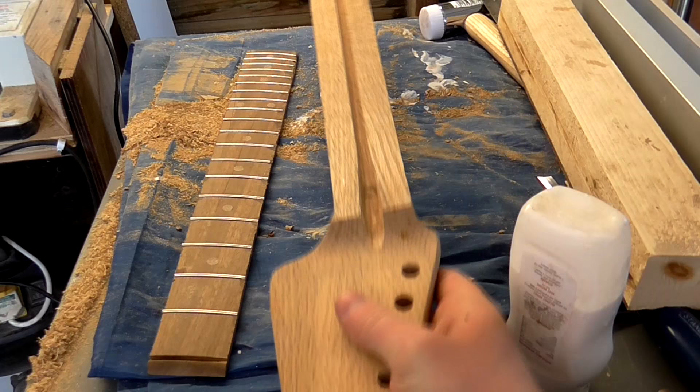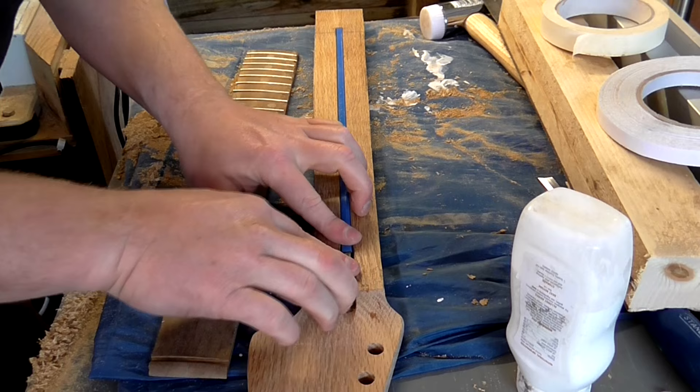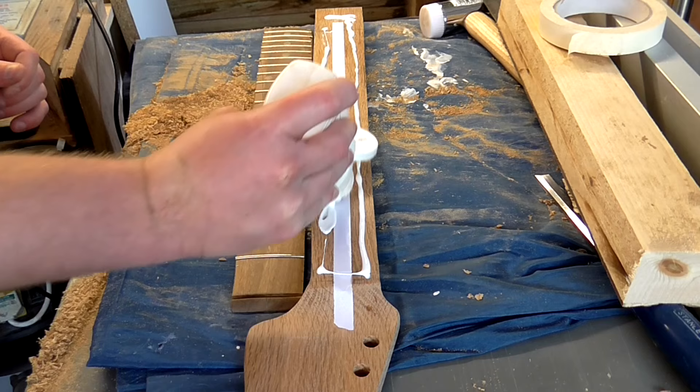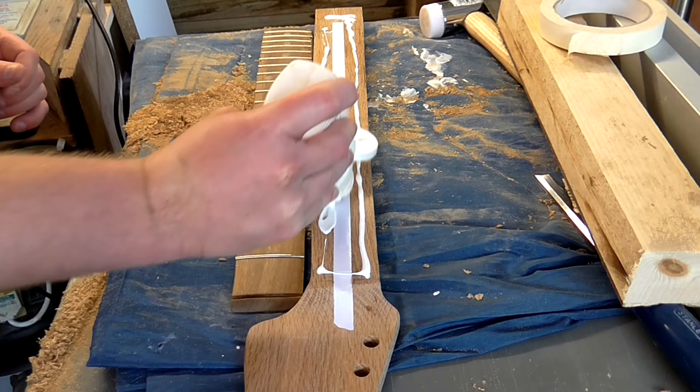Finally I could insert the truss rod and glue the fretboard to the neck. I used a piece of tape over the truss rod slot so that the glue wouldn't seep into the slot. Then I applied the glue, spread it out with my finger and clamped the fretboard in place making sure everything was centred once again and using the radius block to hold everything down.